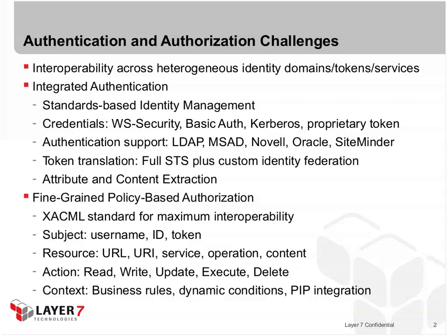The second is the resource — this is what you're trying to access. It could be a URL, a URI, a service, an operation, or content within the message itself. The next is an action: what are you trying to do to this resource? Read, write, update, execute a service, delete. And then a context — this is where business rules and dynamic conditions come in, including integration with a policy information point for additional runtime processing.